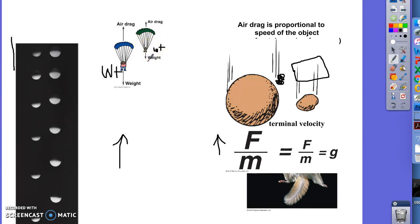Once the lighter person reaches terminal velocity, they will no longer speed up — they keep that one constant speed all the way down. The heavier person has more weight, so they have to fall farther and accelerate more before reaching terminal velocity — before air drag equals their weight. Once it does, they also reach a constant speed and can't go any faster. But yes, the heavier person will be going at a higher speed when they hit the ground. You could adjust for this by giving the heavier person a bigger parachute, increasing their drag, so they reach terminal velocity at a lower speed.